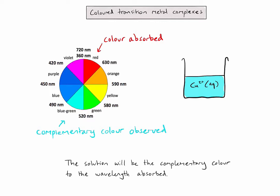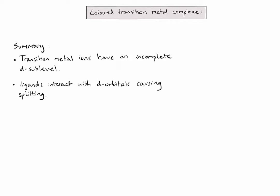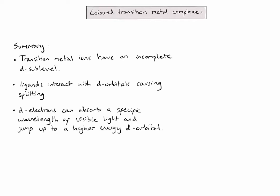Let's now see if we can highlight the key points that might be required in an exam question. So, if you were asked to explain why transition metal complexes are colored, it's useful to state, first of all, that transition metal ions have an incomplete d-sublevel. During the formation of the complex ion, ligands interact with the d-orbitals, causing splitting. Once that splitting has occurred, d-electrons can absorb a specific wavelength of visible light and jump up to a higher energy d-orbital. The resulting color of the solution is the complementary color of the wavelength of light absorbed.